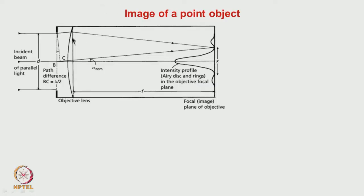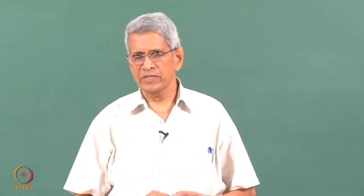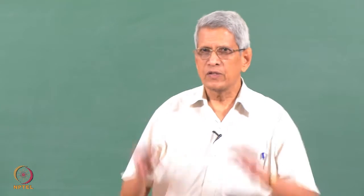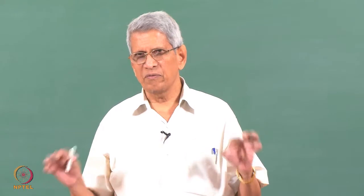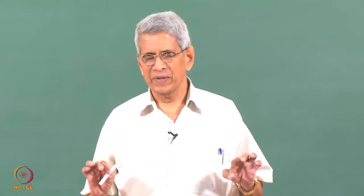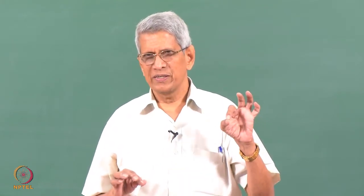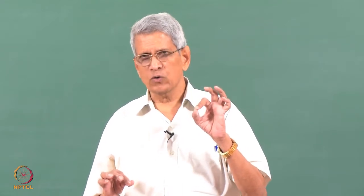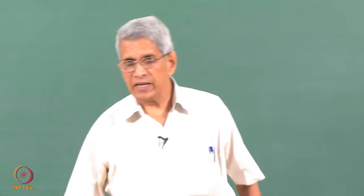Consider the case where light comes from a very far away point object as a parallel beam, and a lens focuses it onto a screen. When the aperture is large, we get a shadow of that object in the image. As the aperture becomes smaller and smaller, the shadow becomes smaller too. But the question arises: what happens when the aperture size becomes of the order of the wavelength of the radiation?